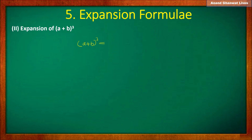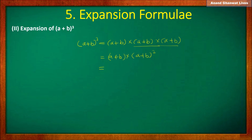The cube of a plus b is equal to a plus b into a plus b into a plus b. So it is equal to a plus b into the square of a plus b. Now we know the formula of square of a plus b, so a plus b squared equals a squared plus 2ab plus b squared.